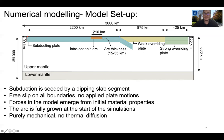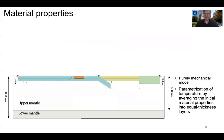Therefore, forces in the model emerge from initial material properties. The arc in these simulations is fully grown at the start of the models, so we don't account for crustal growth. These models are purely mechanical; therefore, we do not account for the effect of thermal diffusion. Because our models are purely mechanical, the effect of temperature on initial material properties is averaged by averaging the material properties in layers of equal thickness.